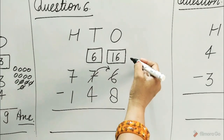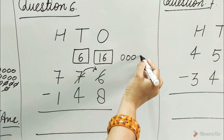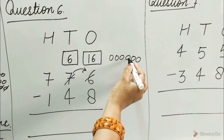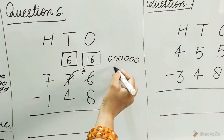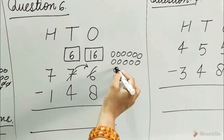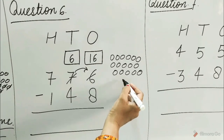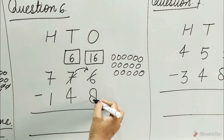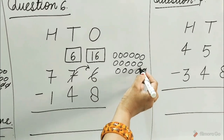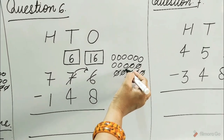Subtract the ones column. Draw 16 circles: 1 through 16. And cut 8 circles from the 16 circles: 1, 2, 3, 4, 5, 6, 7, 8.